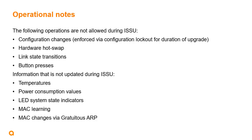There are a number of operations that are not allowed while ISSU is in progress. These include configuration changes — enforced by locking out the switch configuration for the duration of the upgrade — hot-swapping any switch hardware including management modules, line cards, power supplies, or fan trays; link state transitions; or front panel button presses. Attempting to perform any of these operations may result in ISSU errors or automatically aborting the upgrade.